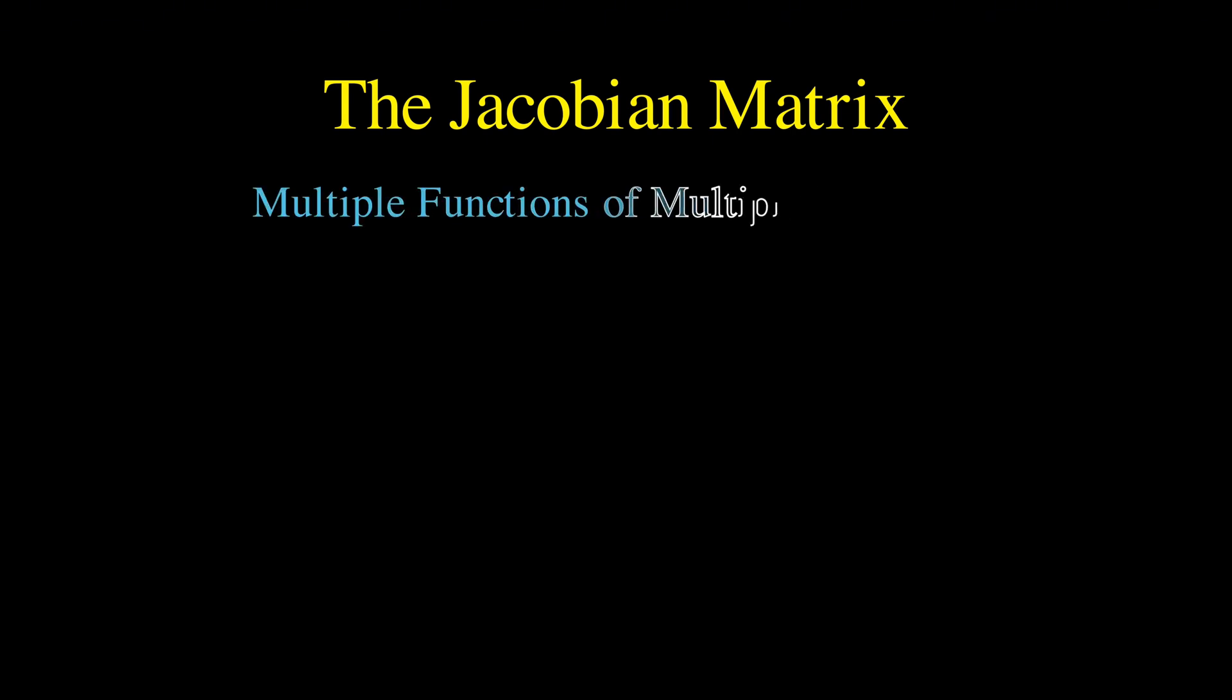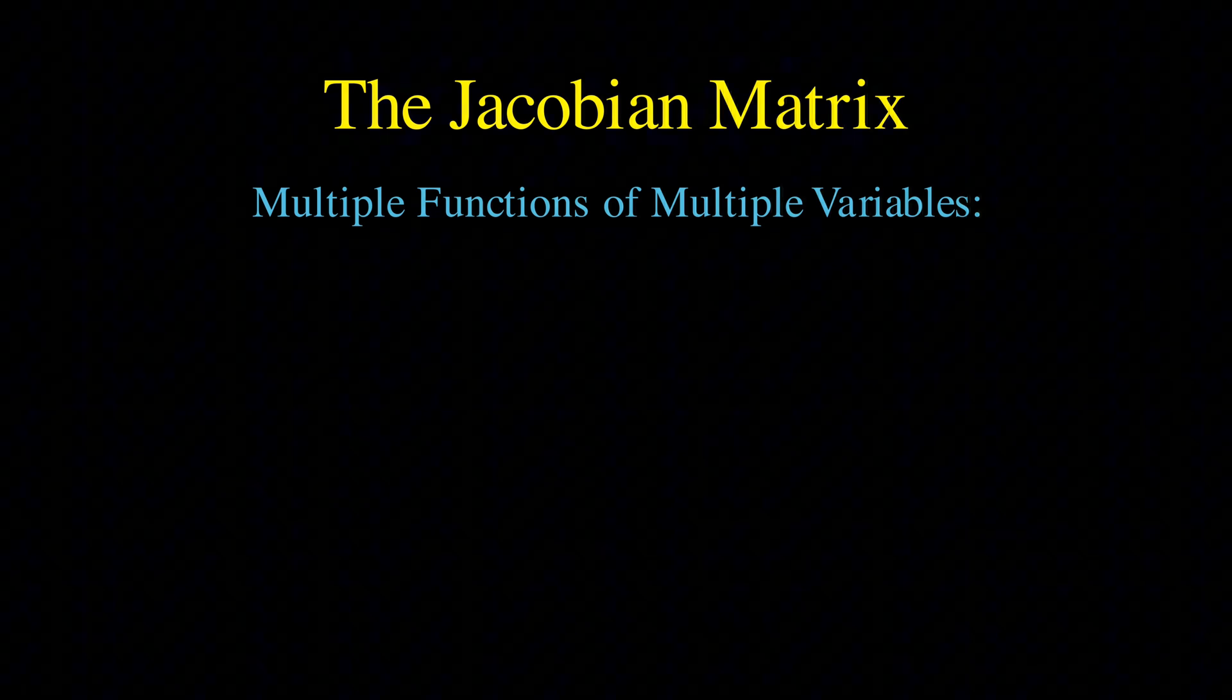Now comes the beautiful leap that defines the Jacobian matrix. What happens when we have not just one function of multiple variables, but multiple functions, each depending on multiple variables?